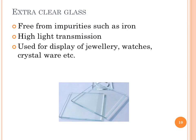Next is extra clear glass. These types of glass are extra clear, mainly because they are free from impurities such as iron. They have high light transmission. They are used for display of jewelry, watches, crystal, etc., and in showrooms.